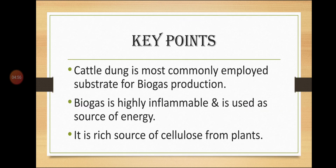Some key points to remember: cattle dung is the most commonly employed substrate for biogas production. Biogas is highly inflammable and used as a source of energy. It is also a rich source of cellulose from plants.